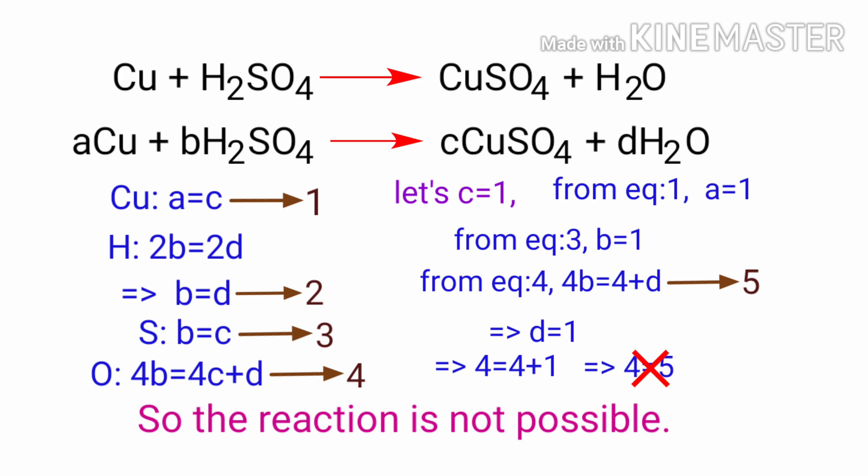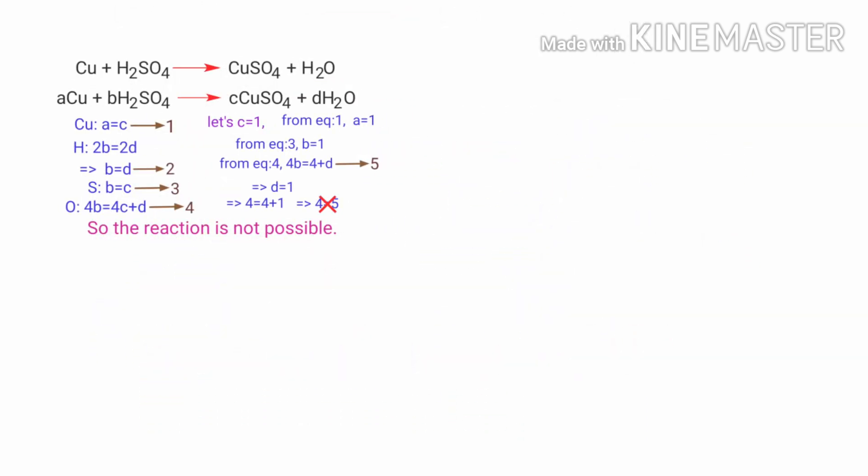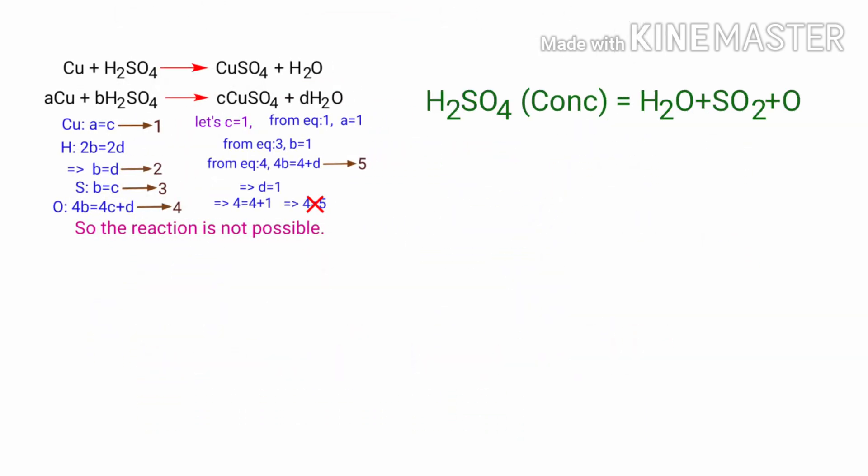But the reaction would be possible if the sulfuric acid is concentrated. Concentrated H₂SO₄ equals H₂O plus SO₂ plus O. Then Cu plus O equals CuO. So CuO plus H₂SO₄ equals CuSO₄ plus H₂O.